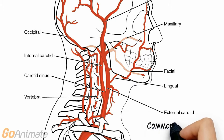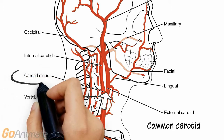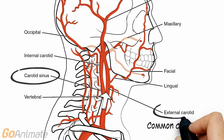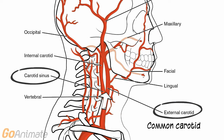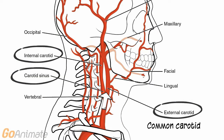If we follow the common carotid artery, we see that it splits or bifurcates into internal and external carotids. The carotid sinus, a baroreceptor that senses blood pressure, is located at the bifurcation.